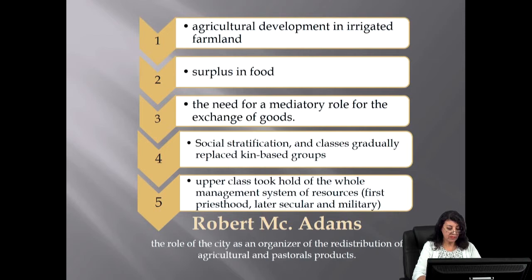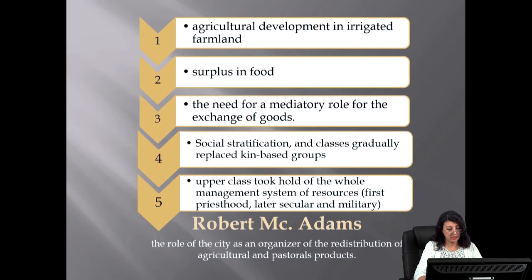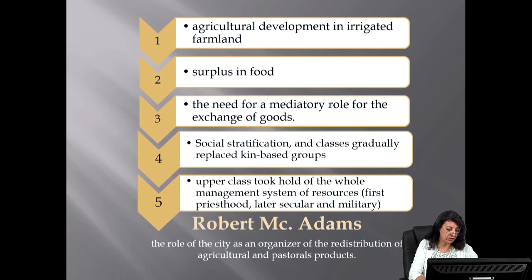Several theories were envisaged discussing the origin of these ancient cities. The approach argued by Robert McAdams has long been the most adhered to among scholars. Adams emphasized the role of the city as an organizer of the redistribution of agricultural and pastoral products. He suggested that agricultural development in irrigated farmland with the surplus in food that appeared led to the need for a mediatory role for the exchange of goods. Social stratification followed, and classes gradually replaced kin-based groups. Finally, an upper class took hold of the whole management system of resources.